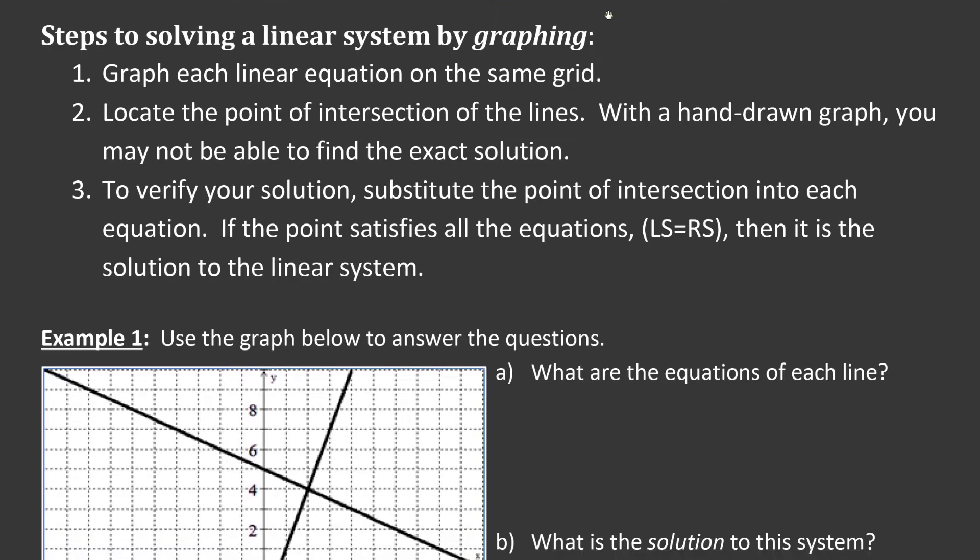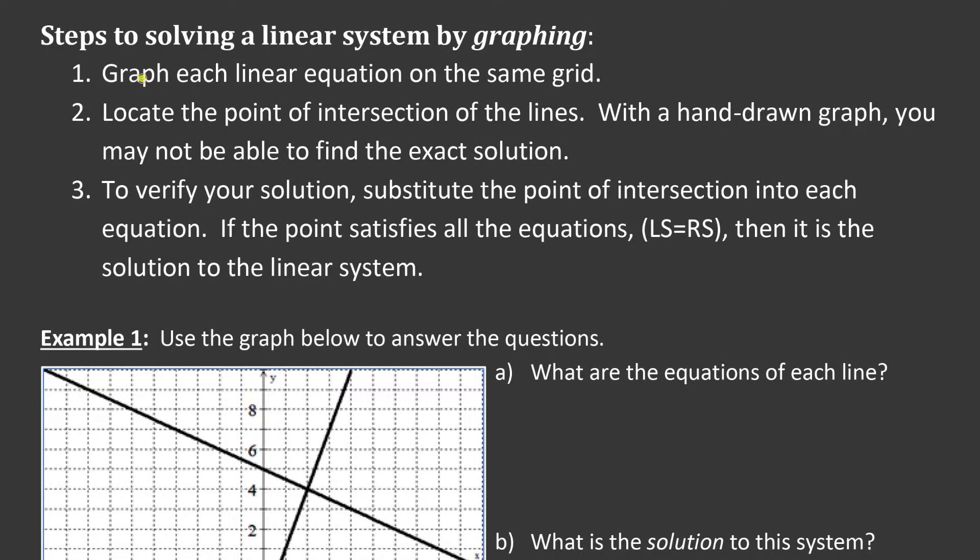Now, when you're solving by graphing, here's just a couple of steps to keep in mind. You want to graph each on the same grid. That's pretty obvious, right? You want to locate the point of their intersection. And with a hand-drawn graph, it might not be super awesome to see. So, you know, hand-drawing is going to go by the wayside when we have our digital tools. Now, to verify your solution, you might be asked to check or verify your solution. What we need to do is we need to put the substitution, that point of intersection, we need to substitute that back into each equation and see if it actually works. We call that satisfying the equations, if it actually makes the left side equal the right side. Let's take a look at an example of that.